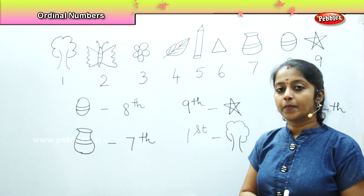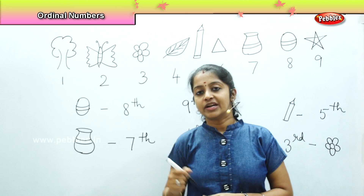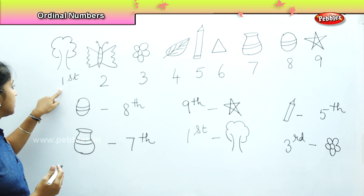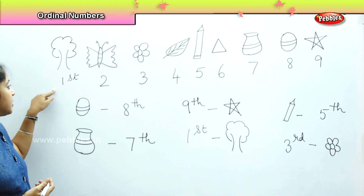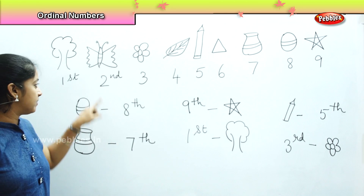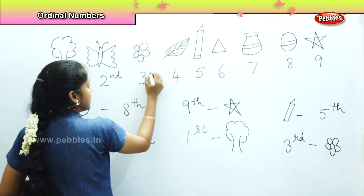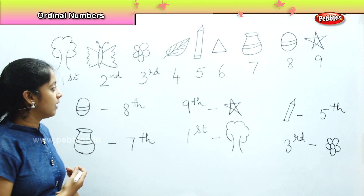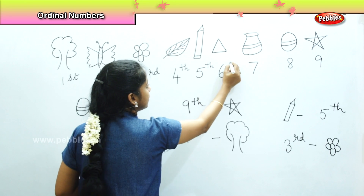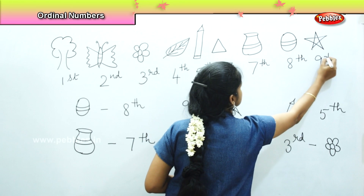Children, you have all understood how to tell the position of a particular object. Whenever we tell the position: if it is number 1, we say it is placed in the 1st position — we add the word ST. For number 2, we add ND to say 2nd position. For number 3, we add RD for 3rd position. For number 4 onwards, we add TH — so it is 4th, 5th, 6th, 7th, 8th, 9th.